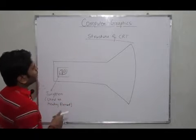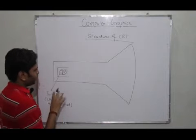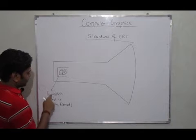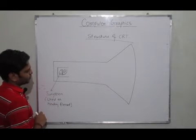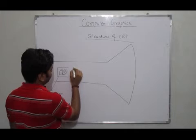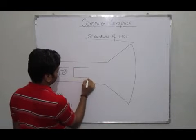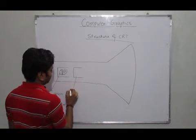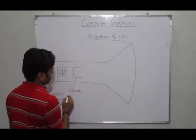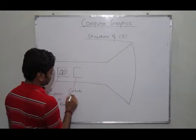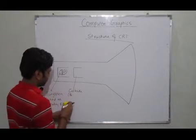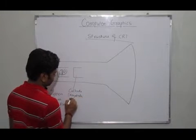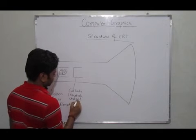In the structure of CRT, we have this structure where the first component is tungsten, which is used as a heating element. The second component is the cathode, which is a negatively charged component.